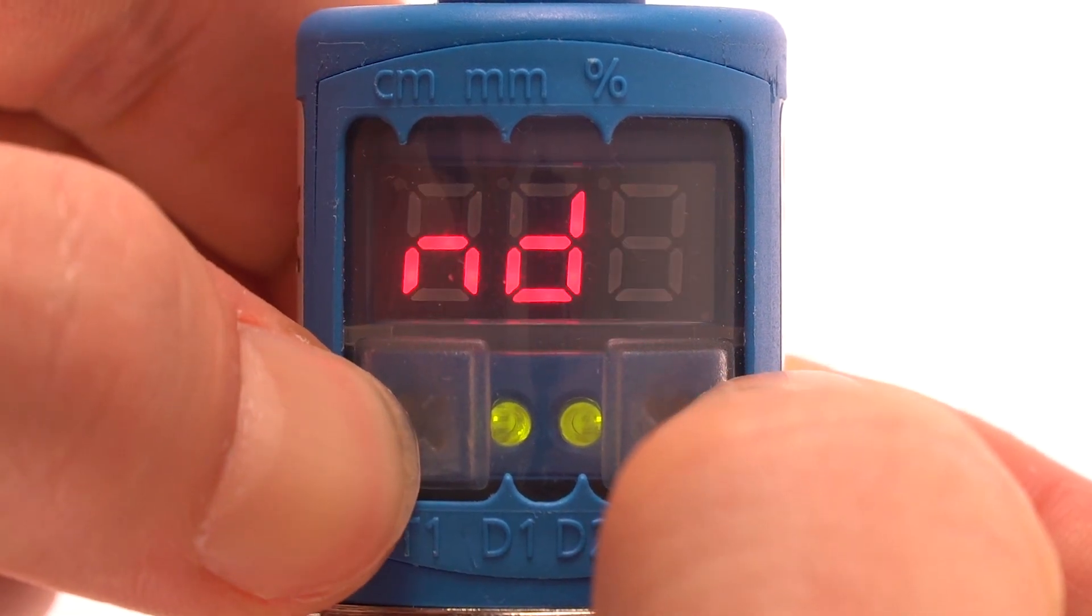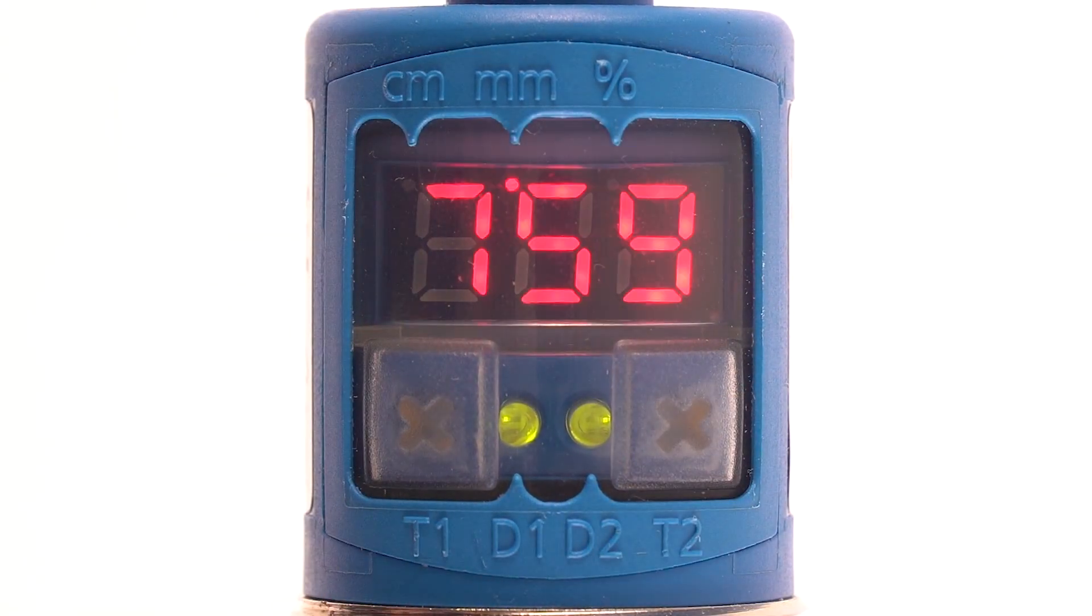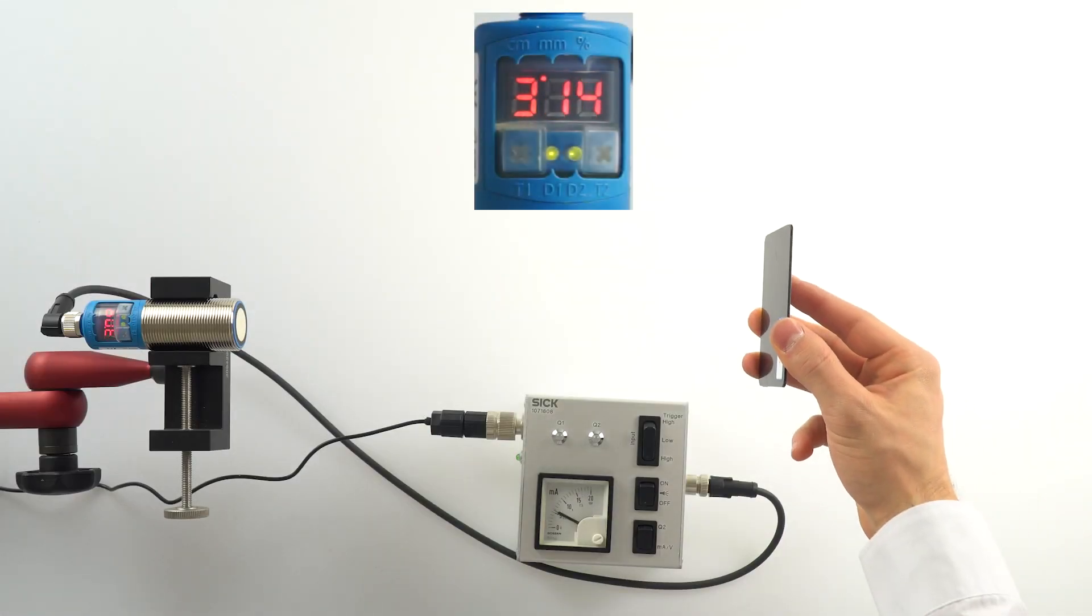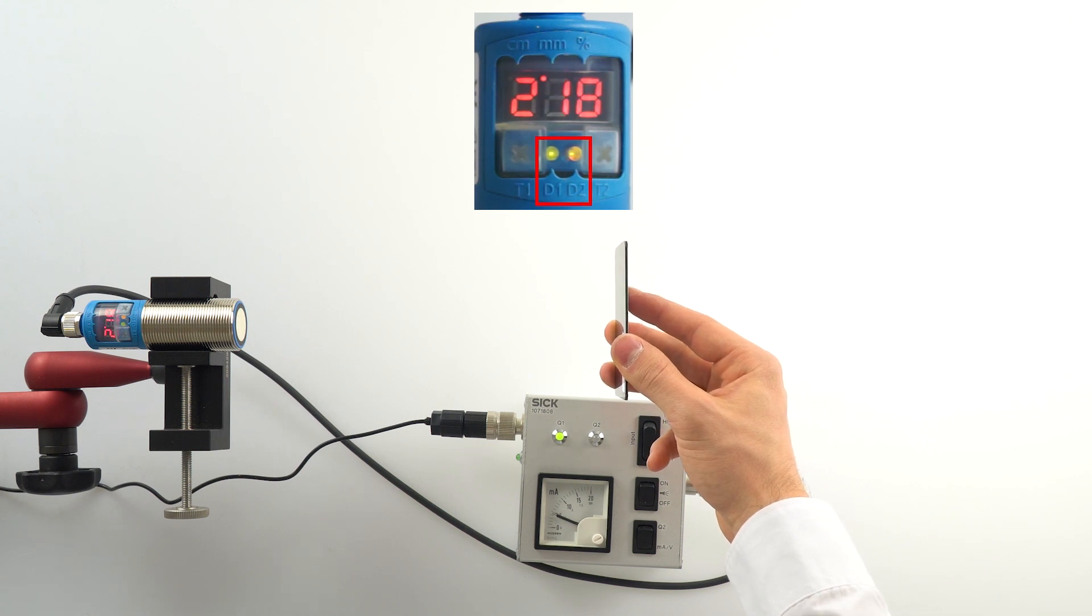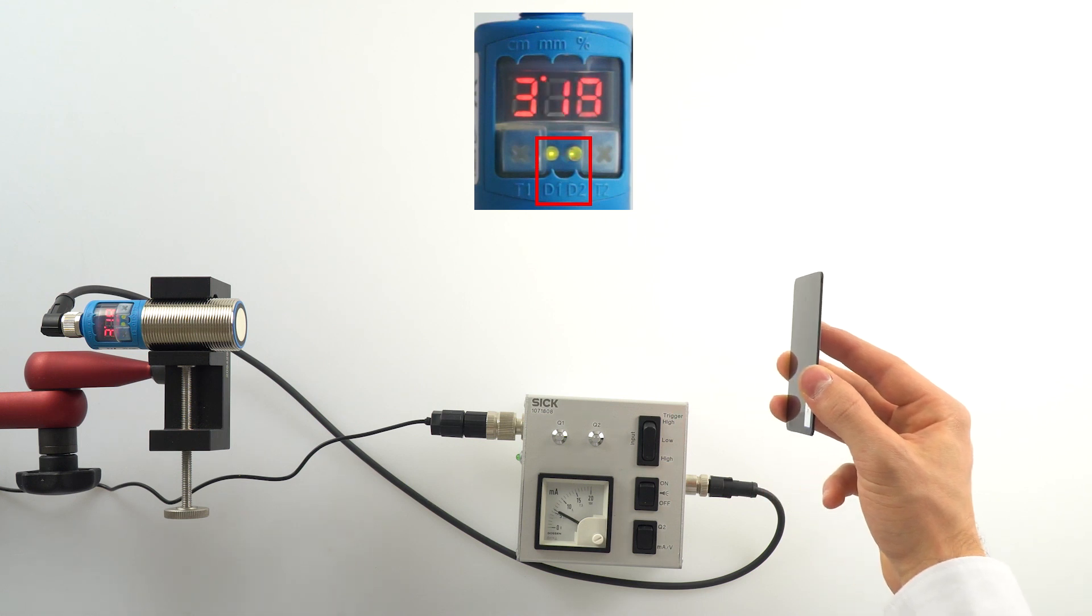To finish this parameterization, simultaneously press T1 and T2. The switching point is now saved. Now you are below the switching point. And now you are above the switching point.